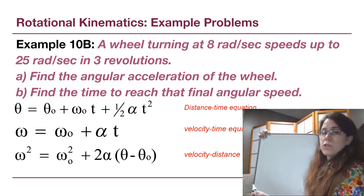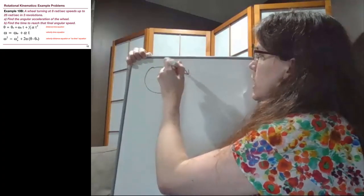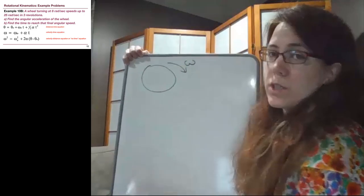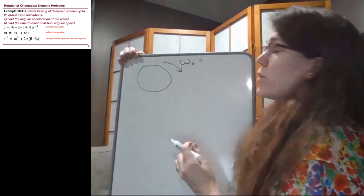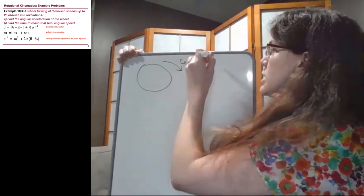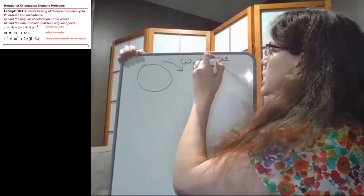We have a wheel that's turning at 8 radians per second. Here's our wheel rotating. It doesn't matter what direction it's rotating. That initial thing we learn about the wheel is the 8 radians per second, so that's the initial angular velocity ω₀.